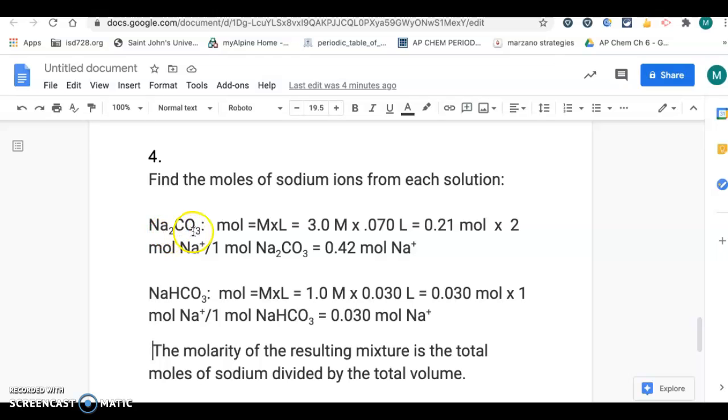For Na2CO3, so to get the number of moles, it's molarity times liters. So, we do that for each of these different solutions. For Na2CO3, we also have to factor in that there's two sodium ions in the formula. So, once you get the number of moles, 0.21 moles, then you're going to multiply by that 2 to 1 mole ratio, and you get the moles of just sodium ions. Do the same thing for NaHCO3, but in this case, it's only one mole of sodium ions in the formula. So, once you get the number of moles, it's going to be the same as the number of moles of sodium.